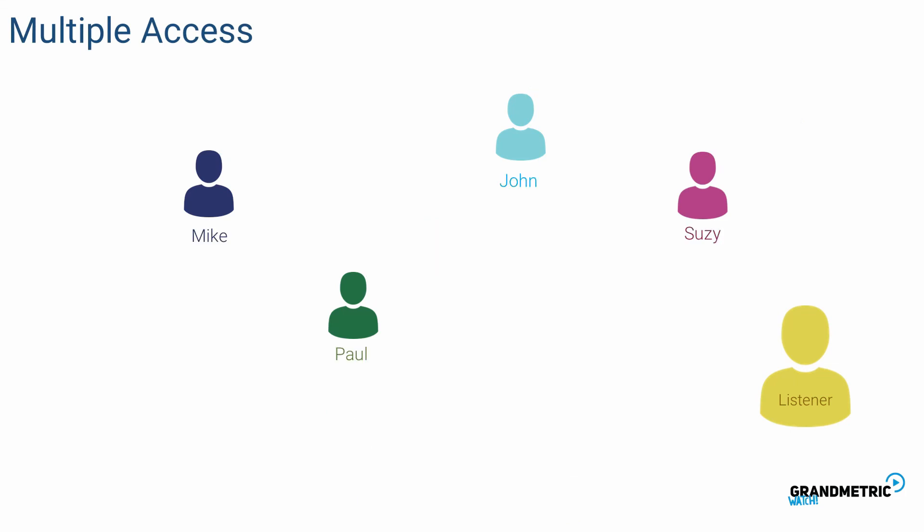The last scenario we will discuss is based on carrier sensing. Let's assume that Mike is already speaking to the listener. John has a great idea and would like to share it with the listener. In this approach he must check if there is someone else speaking. If he can hear someone then he waits for the opportunity to jump in. When Mike is done talking John shares his idea.